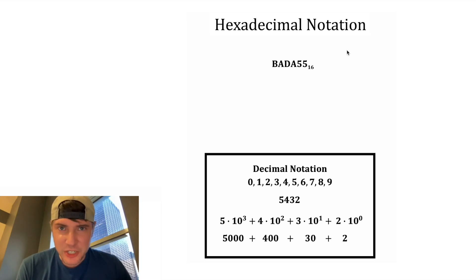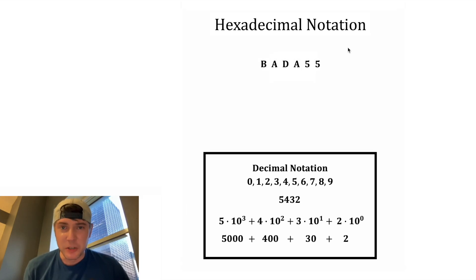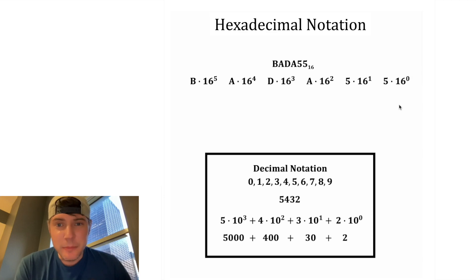In hexadecimal notation, it's the exact same idea. We split up each of the digits. But now instead of base 10, each of these is going to be a 16. So the first 5 is multiplied by 16 to the 0. The next one is multiplied by 16 to the 1. And then this digit is multiplied by 16 to the 2. This one is multiplied by 16 to the 3, and so on.